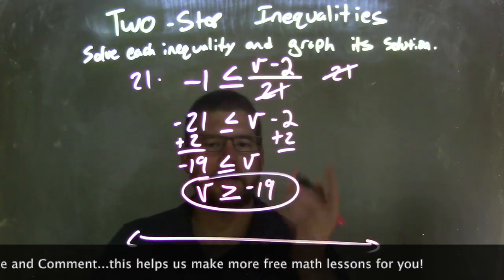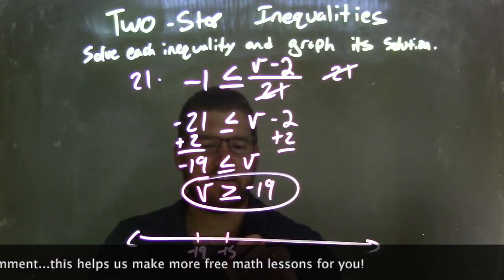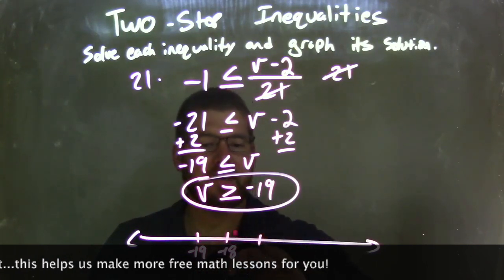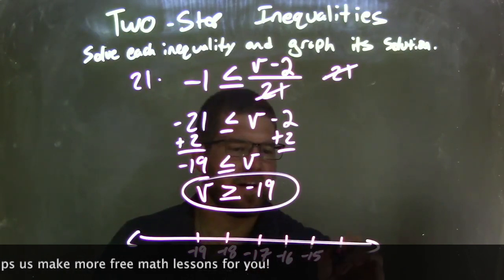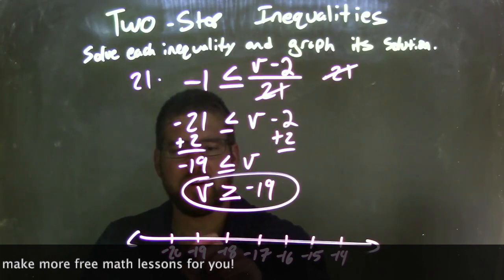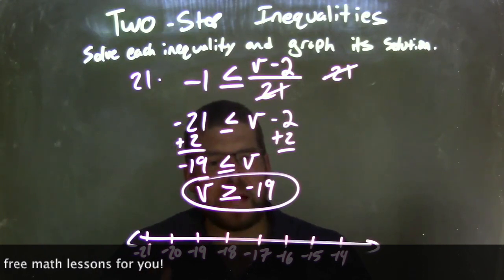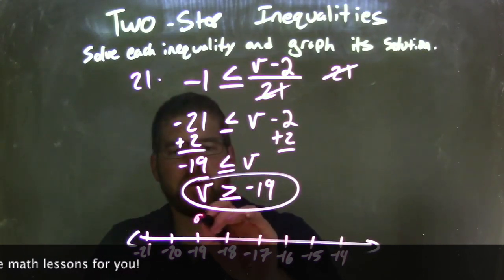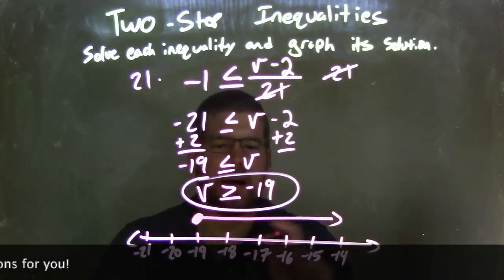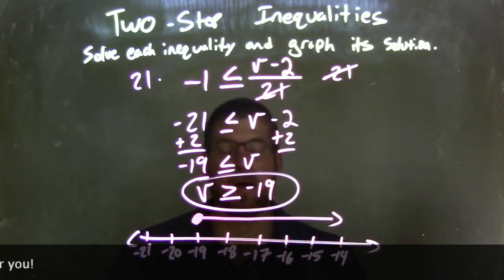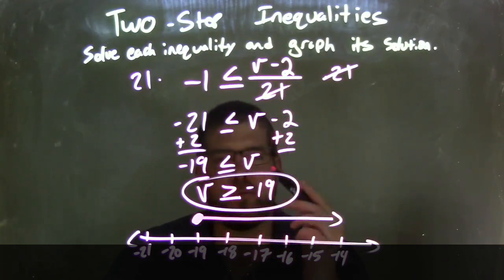Now we need to graph it. Going by 1s on the number line: negative 19, negative 18, negative 17, negative 16, negative 15, negative 14, and negative 20, negative 21. Since b is greater than or equal to negative 19, the equal to means we have a closed circle right there. Since b is greater than, I put my arrow to the right. Our graph matches our final answer, which is b is greater than or equal to negative 19.